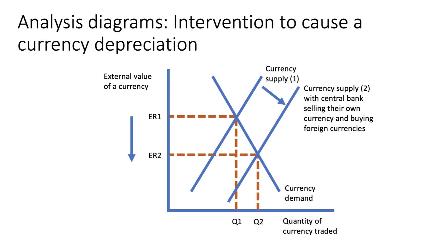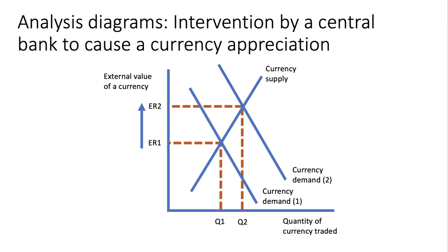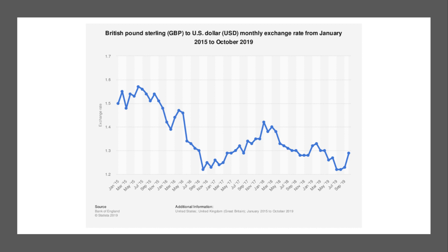Diagrams are always useful for top marks. For a currency depreciation intervention, the central bank sells its currency and buys foreign currencies, shifting the supply curve of the currency out to the right — for a given level of demand, the exchange rate falls. To appreciate the currency, the central bank buys its own home currency using foreign exchange reserves, shifting the demand curve for the currency out to the right, and the equilibrium external value of the currency rises.